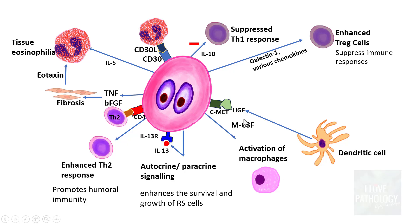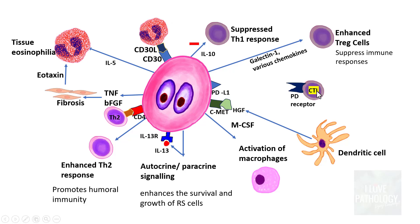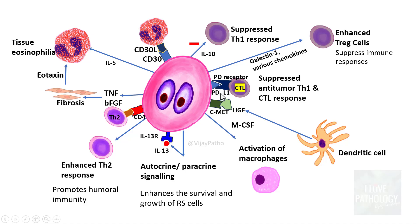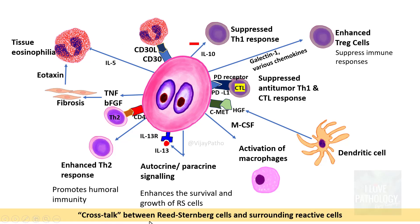Most importantly, Reed-Sternberg cells express PD-L1 (Programmed Death Ligand 1), which binds to the PD-1 receptor on cytotoxic T lymphocytes. This PD-L1 and PD-1 interaction inhibits T-cell responses — this is the mechanism of immune evasion by Reed-Sternberg cells. This represents the cross-talk between Reed-Sternberg cells and surrounding reactive cells, and all these responses lead to the morphological changes and clinical features of Hodgkin Lymphoma.